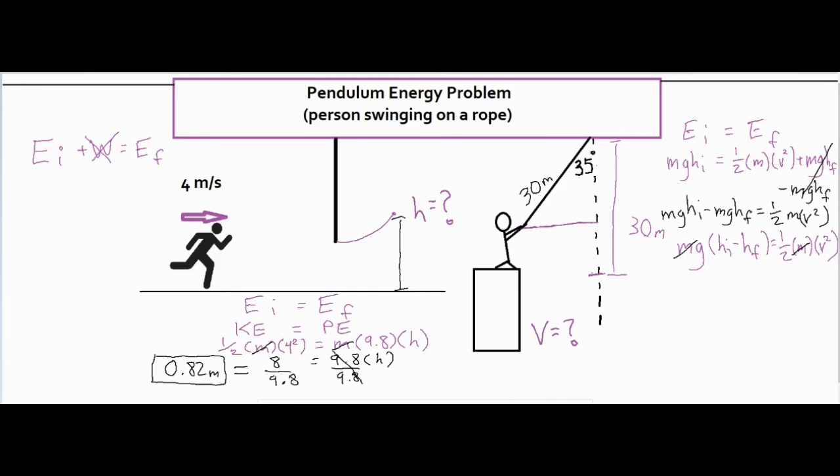So anytime you have an angle and part of a triangle, you can always find all the other parts of the triangle using some trig. So it looks like I want this distance right here, which is the adjacent side, and I have the hypotenuse. So it looks like cosine is going to be the trig function I'm going to want to use. The cosine of 35 degrees equals, I'll call this distance over here, h.